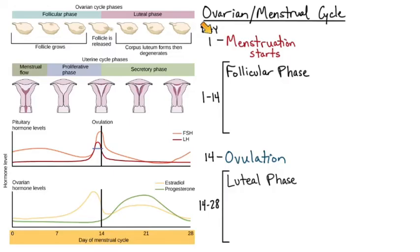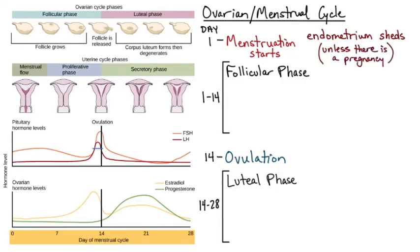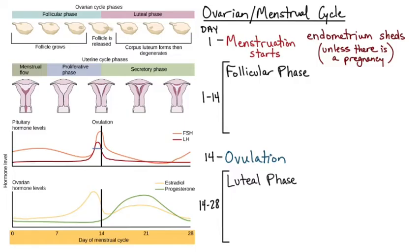We start our timeline with menstruation because it is the observable event. It's easy for a woman to tell when she's menstruating, but it's not easy to tell what part of the follicular or luteal phase is happening, and ovulation can also be difficult to detect exactly. So menstruation is day one because it's easily observable.